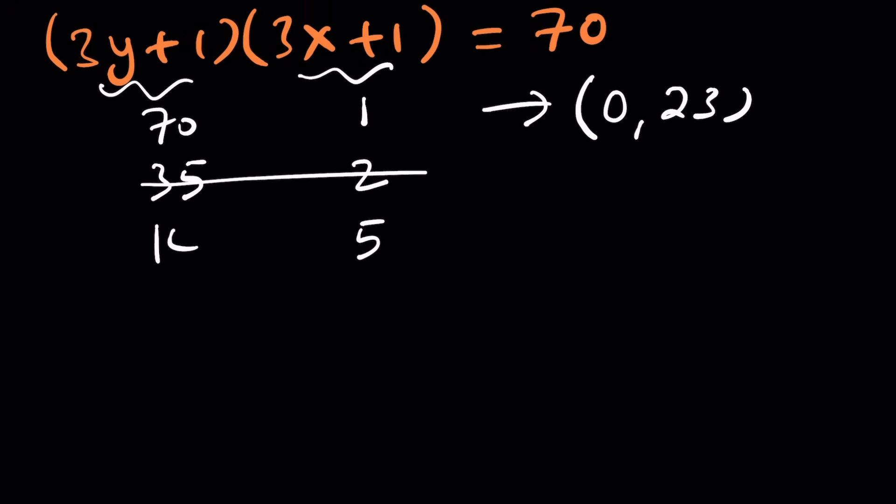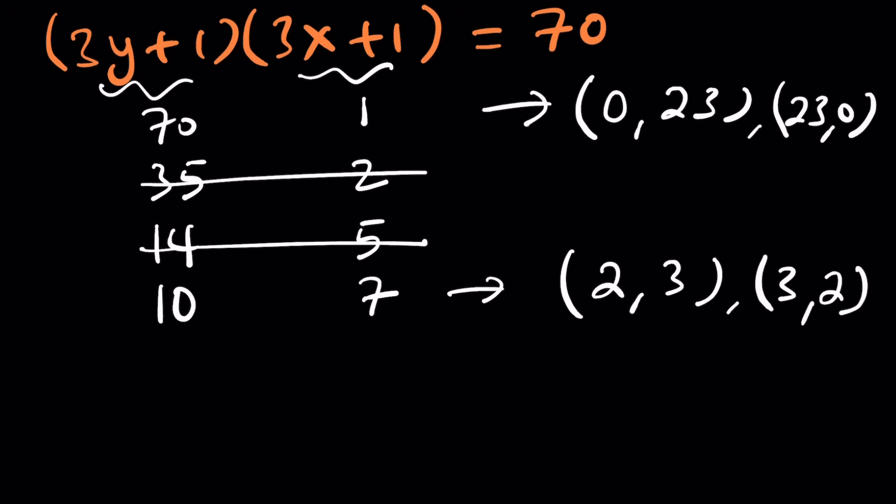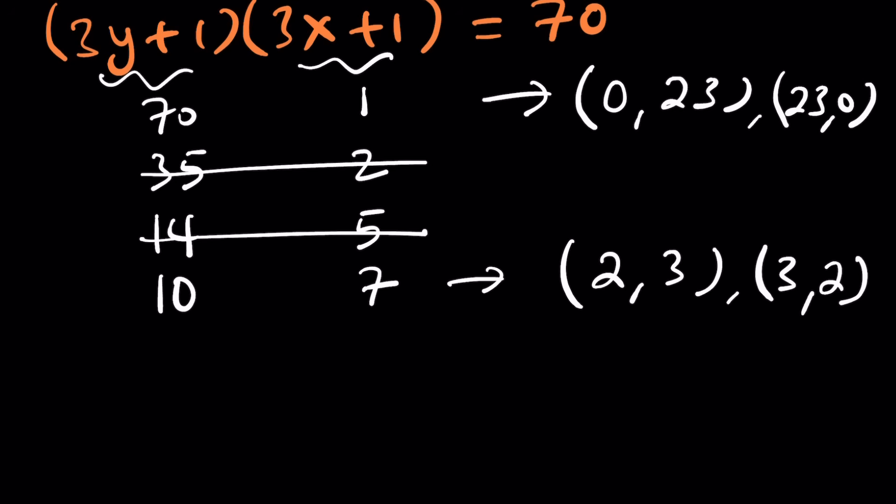The next one is going to be 5 times 14. Again, 3y plus 1 equals 14 gives you 3y equals 13, which is 13 over 3. That's not an integer. We'll continue with the next one, which is 7 times 10 or 10 times 7. This is going to give you a good solution because y is going to be 3 and x is going to be 2. So 2 comma 3 is a solution. But you've got to remember, we could easily switch x and y. So if 70 times 1 works, then 1 times 70 will also work, but it'll just flip these ordered pairs. There's nothing between 7 and 10 that goes into 70. There's no need to repeat. These four solutions should be all the solutions.